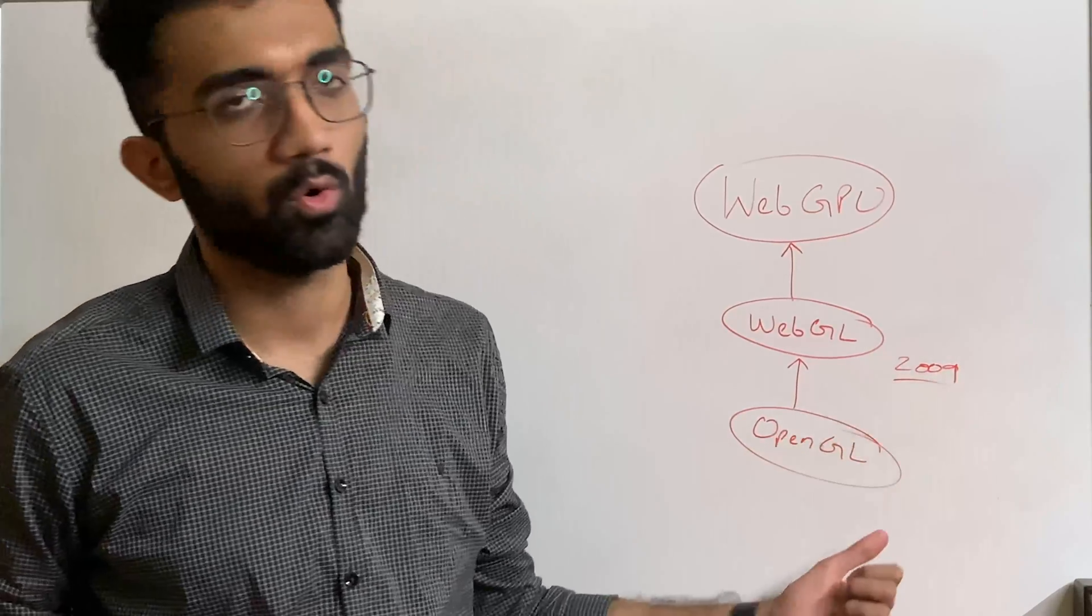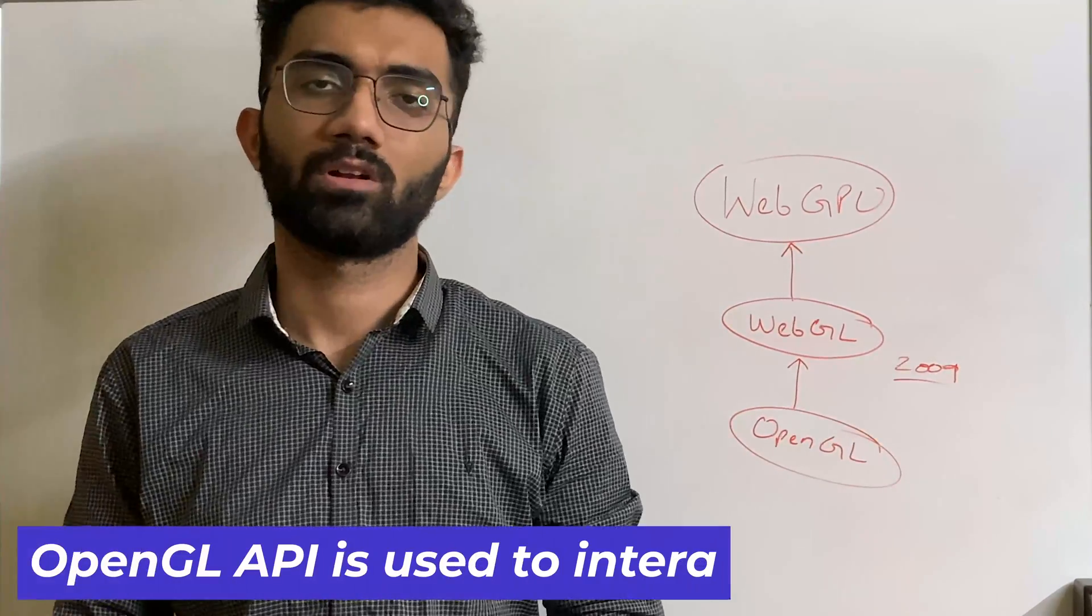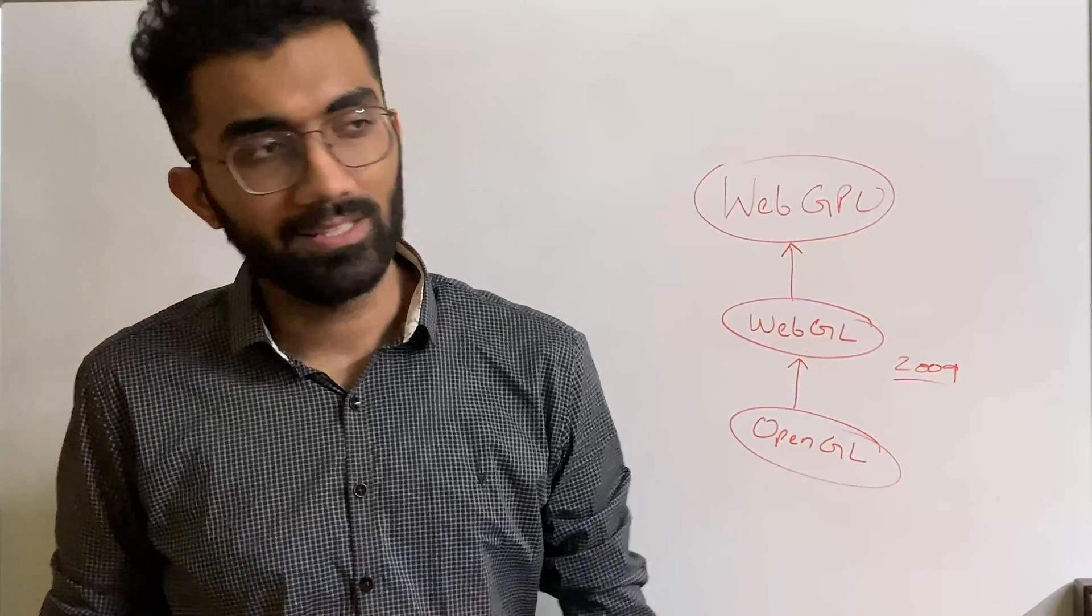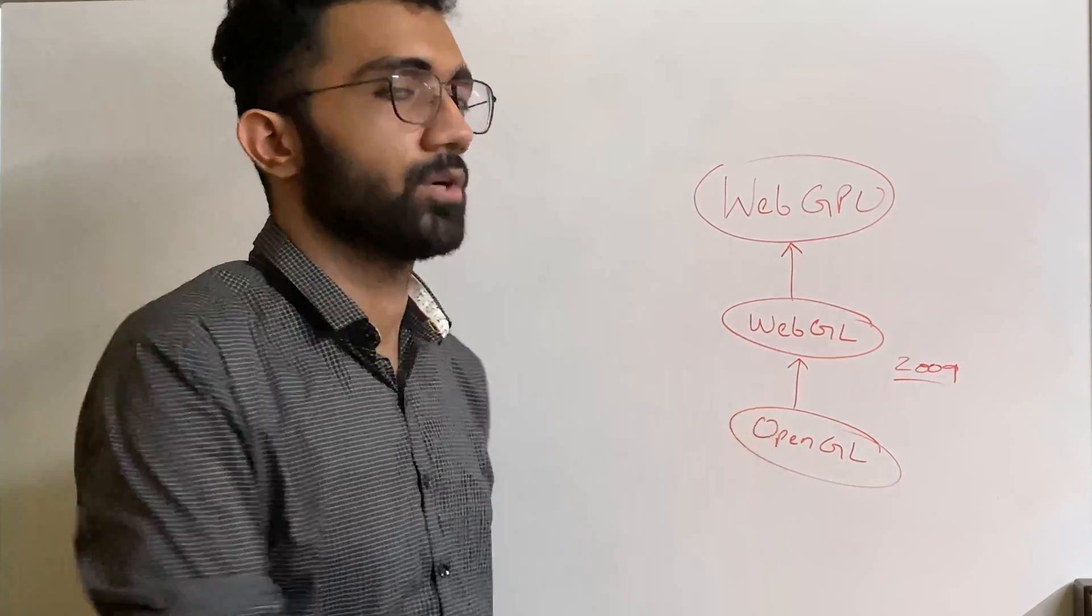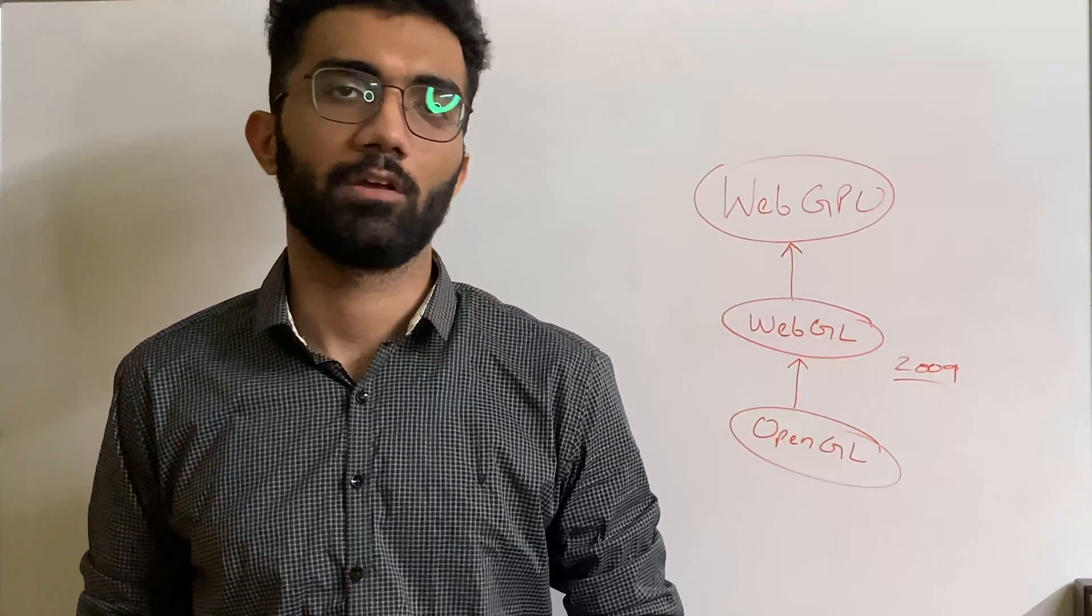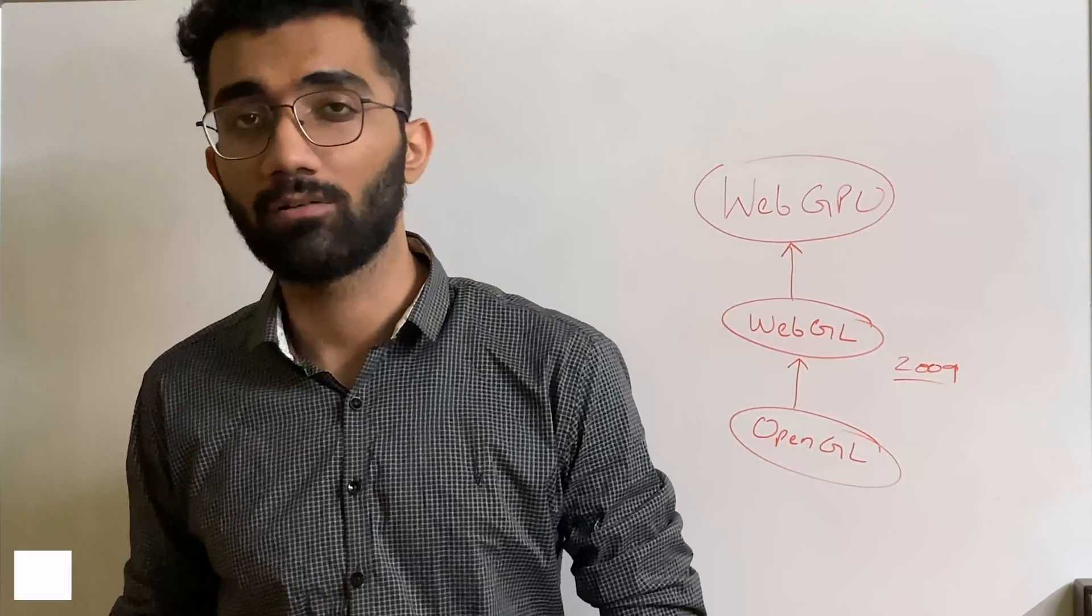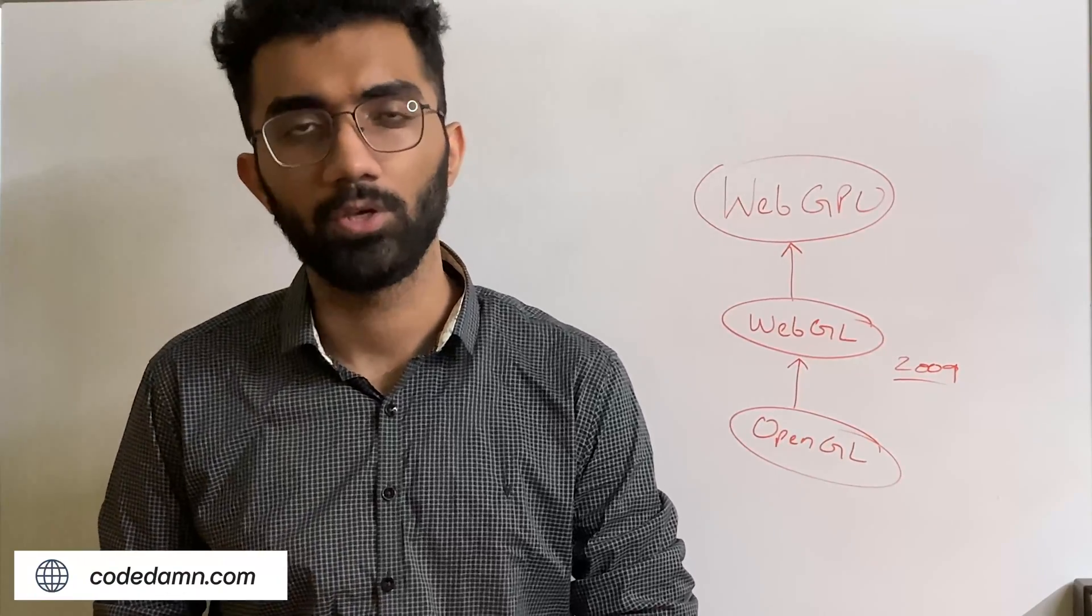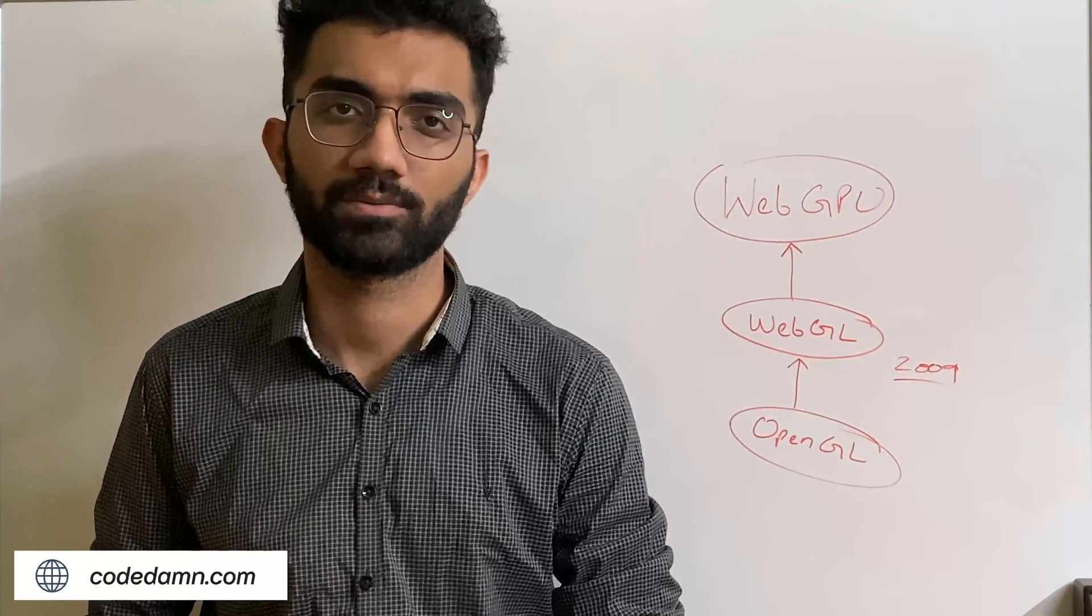So back in 2009, OpenGL was a standard which you could use on Linux, for example, to interact with the GPU. So this set of APIs was not available to the web at that time. That means if you're using a web browser, your JavaScript code, your code running inside the browser could not use GPU for performing certain operations.